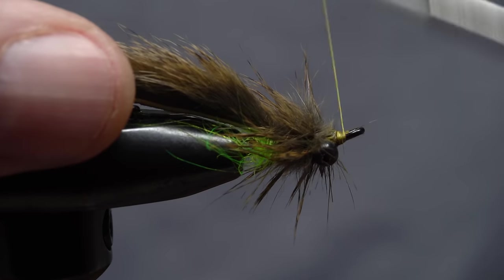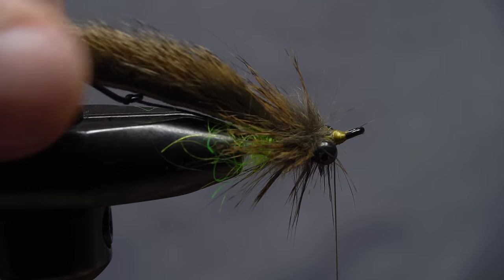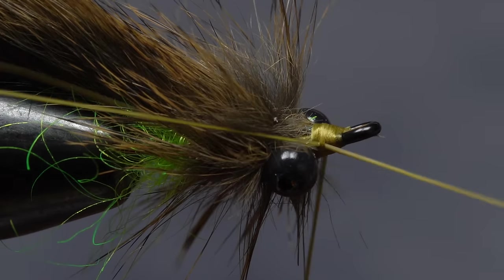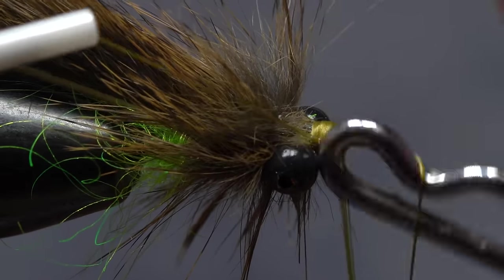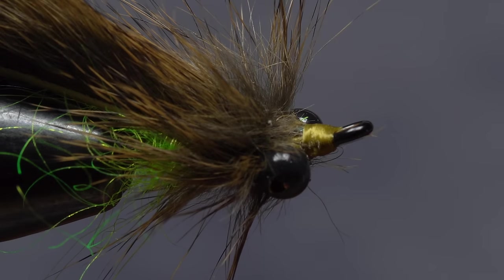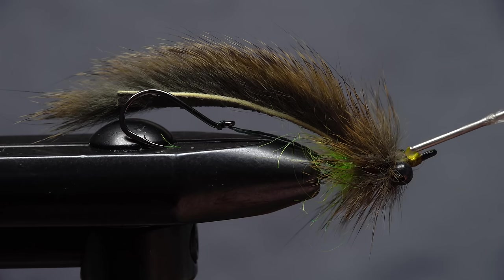Continue to take thread wraps to build up an ample head on the fly, trying not to trap fur in the process. Pick up your whip finish tool and use it to complete a 5 or 6 turn whip finish, then seat the knot well and snip or cut your tying thread free. It's a real good idea to apply a drop or two of head cement, here Sally Hansen hard as nails, to the thread wraps to ensure they don't come unraveled.